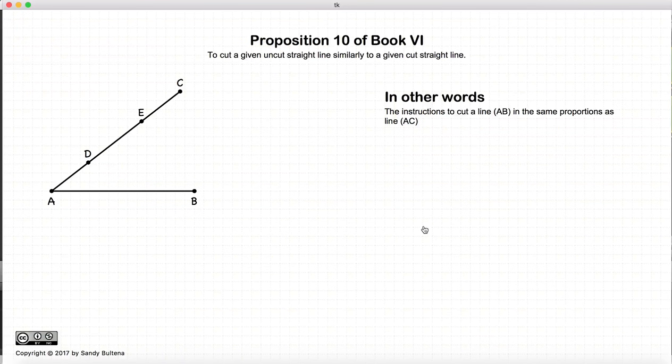In this proposition, we are going to give the instructions on how to take a given line, for example AC, which has been cut into arbitrary segments, and to cut the line AB so that the cuts or the line segments are similar. In other words, the proportions are maintained.